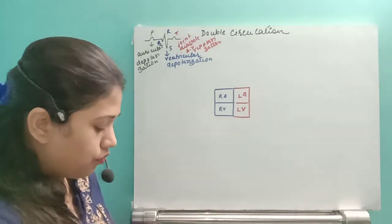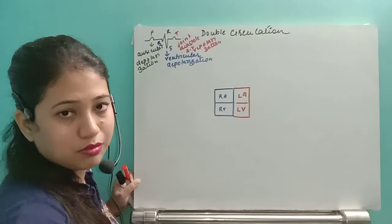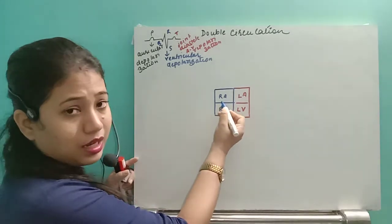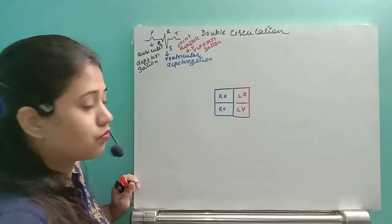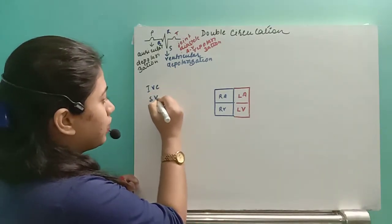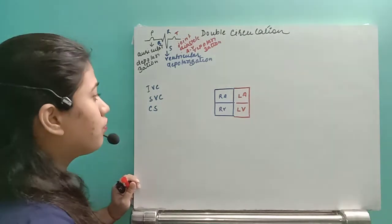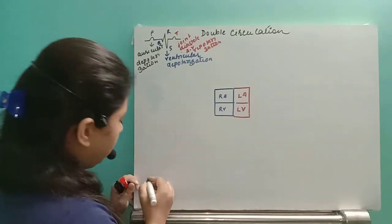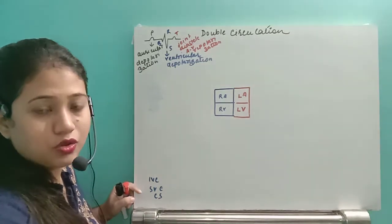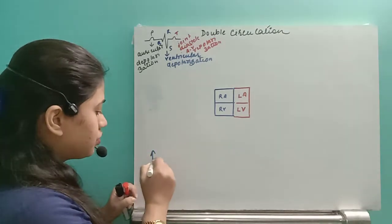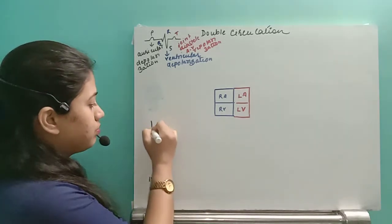First of all, we will start from the pulmonary circulation. This part indicates pulmonary circulation and this part indicates systemic circulation. Inside the right atrium, we have three different main blood vessels: inferior vena cava, superior vena cava, and coronary sinus. All three collect the deoxygenated blood from different parts of the body, and this deoxygenated blood enters inside the right atrium.